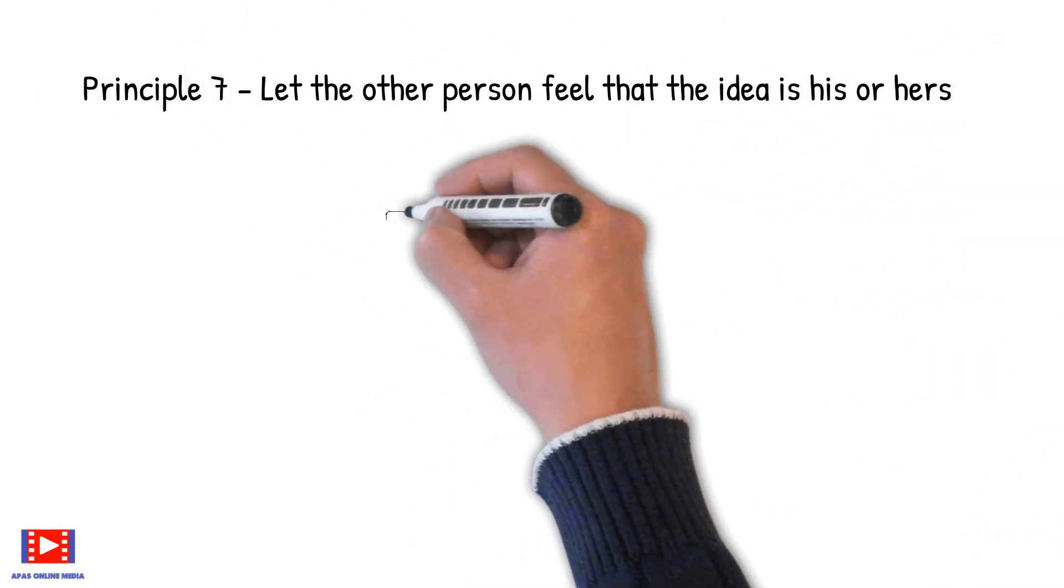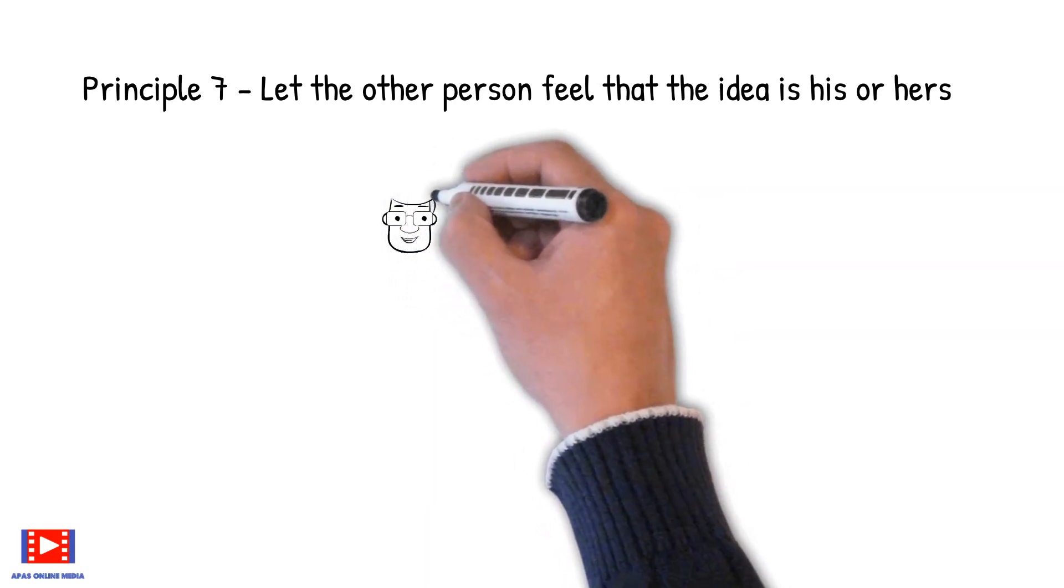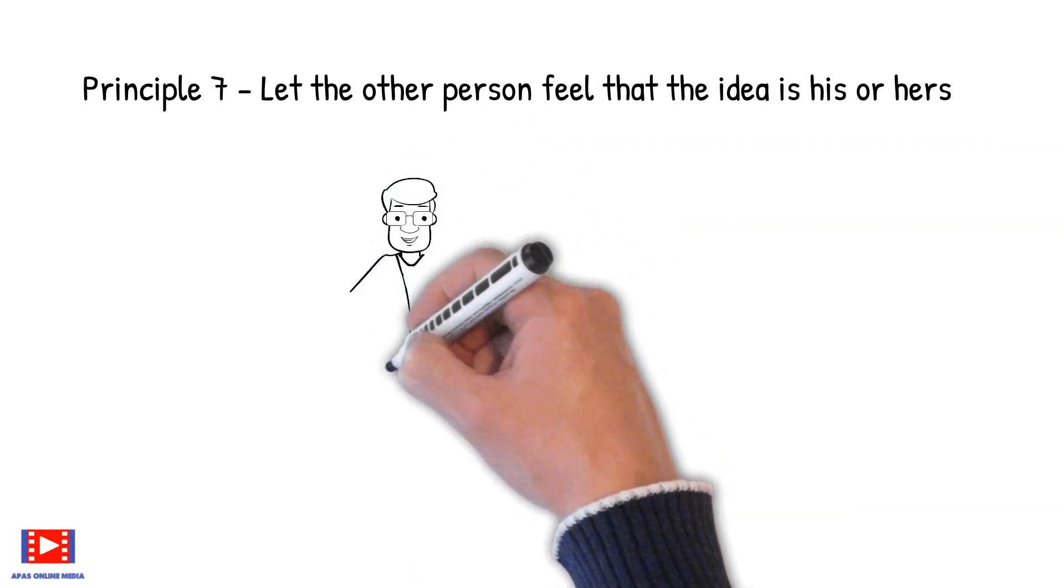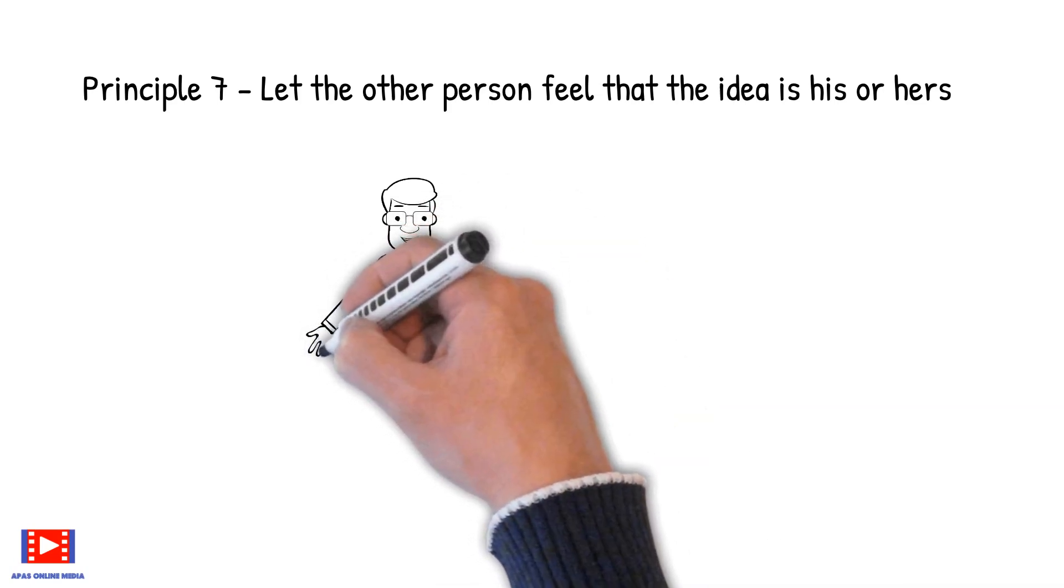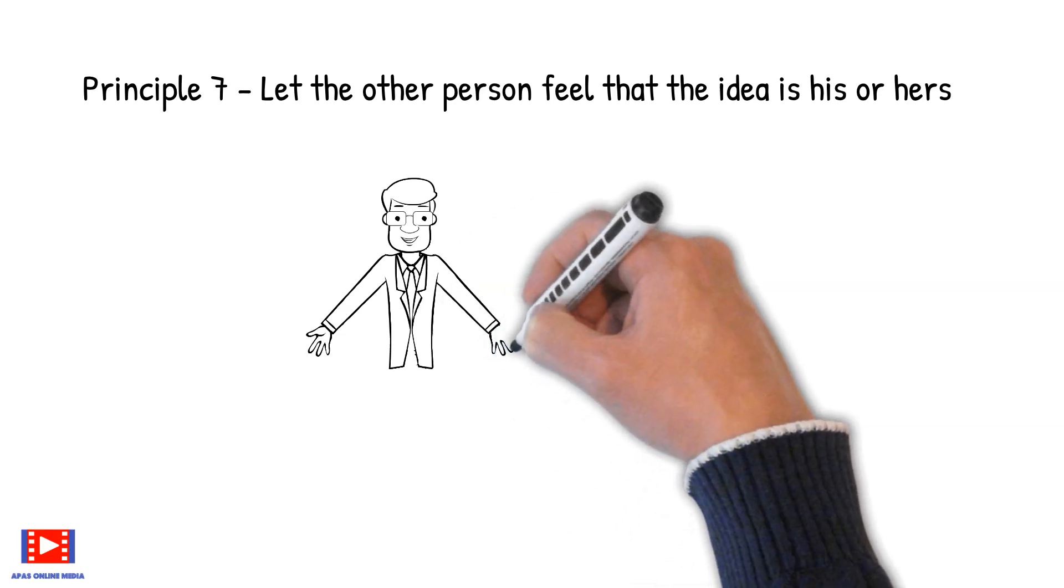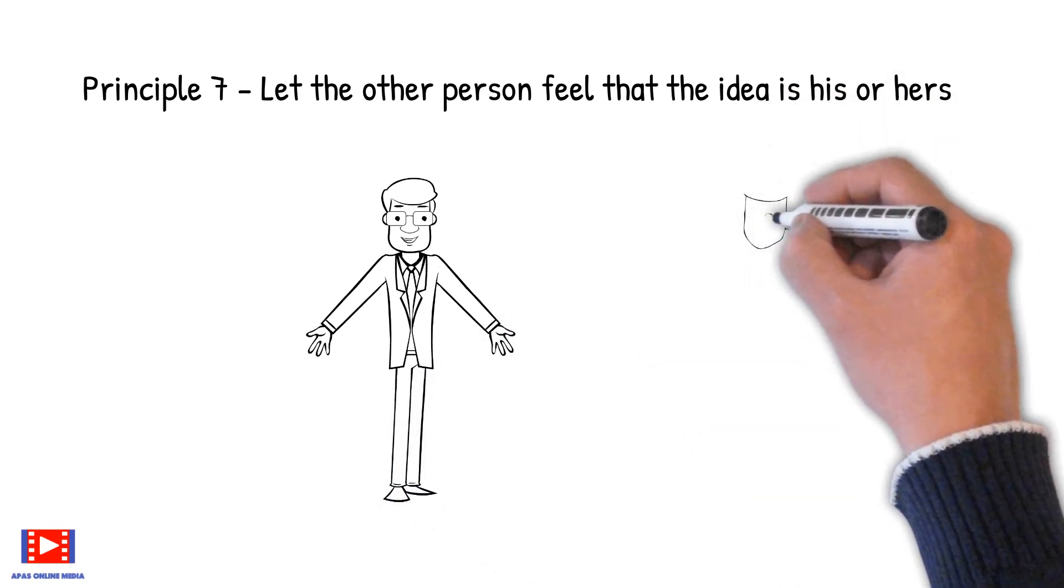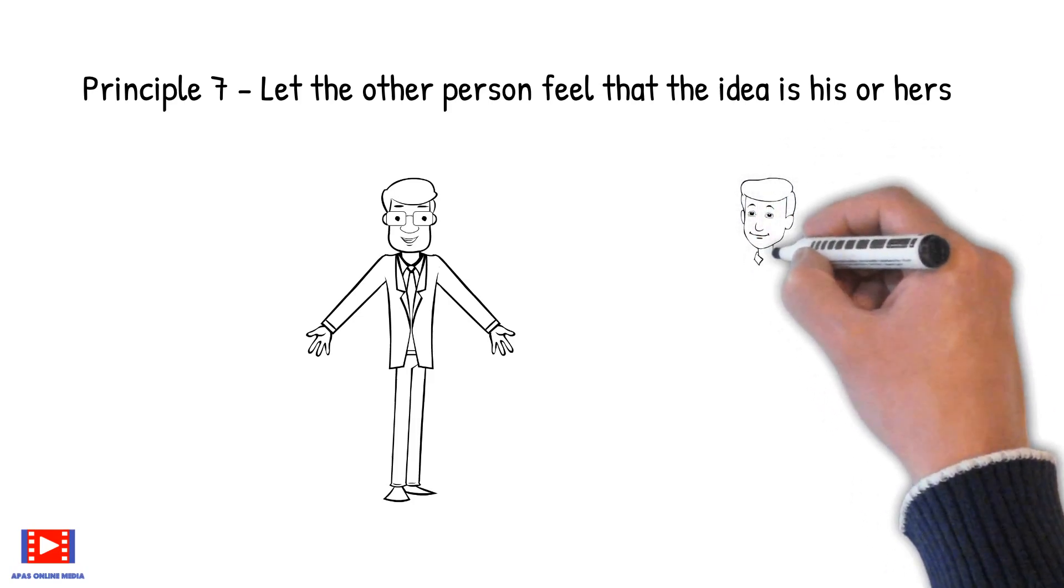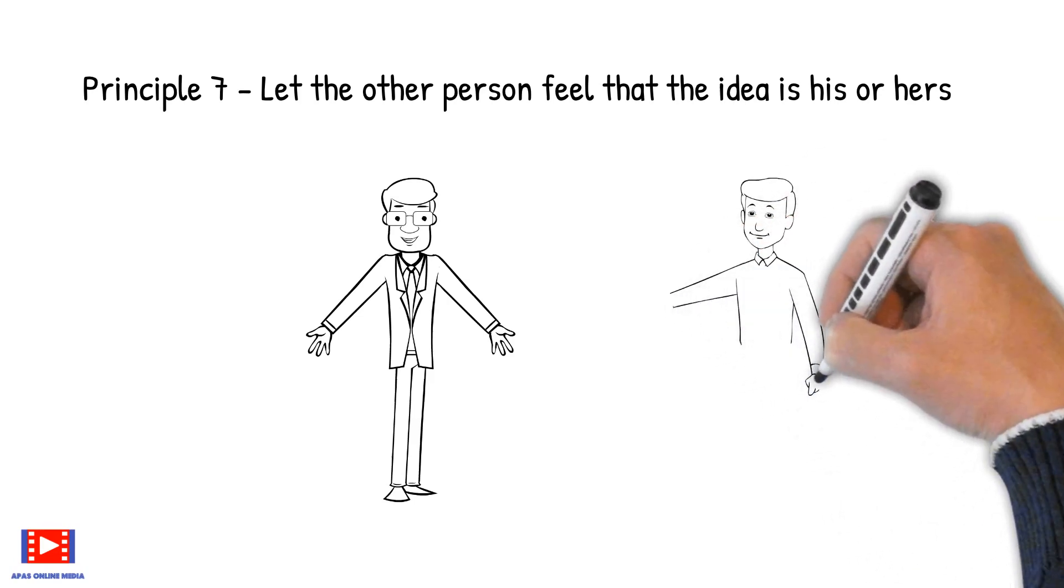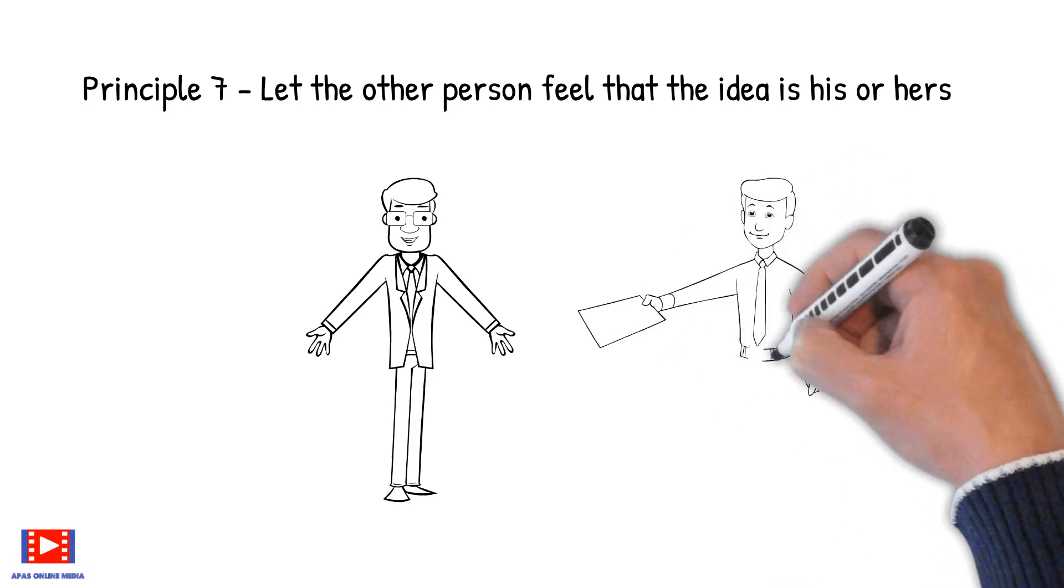Principle 7: Let the other person feel that the idea is his or hers. Don't you have much more faith in ideas than you discover for yourself than in ideas that are handed to you on a silver platter? If so, isn't it bad judgment to try to ram your opinions down the throat of other people? Isn't it wiser to make suggestions and let other person think out the conclusion? By doing so, we can make the other person agree to our terms sooner than late. Allow that person to take the center stage while all the ideas are yours and you know how to control your conversation.